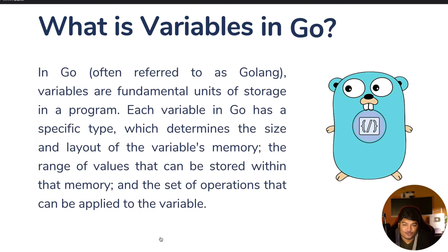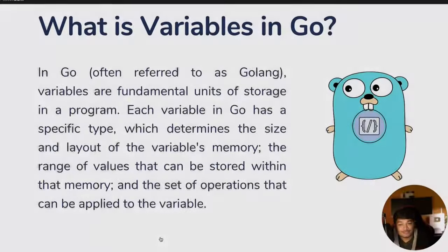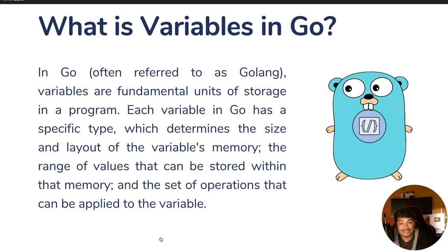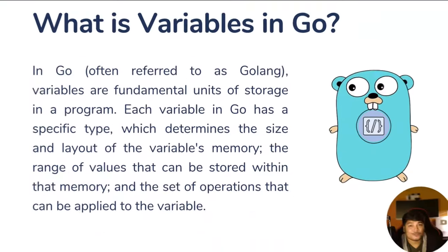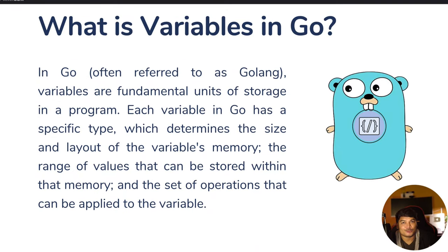So what are variables in Go? In Go, which we often term as Golang, variables are the fundamental unit of storage in a program. Each variable in Go has a specific type, which determines the size and layout of the variable's memory, the range of values that can be stored, and the set of operations that can be applied. In simple words, in a variable we store data temporarily so we can use that data for different operations and use cases.